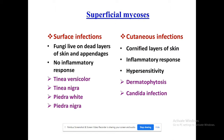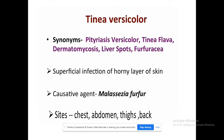Today we will focus on tinea versicolor, also known as pityriasis versicolor, tinea flava, dermatomycosis, liver spot, or perficarens. This is a superficial infection of the horny layer of the skin, caused by the fungus Malassezia furfur. The major sites where it causes disease are the chest, abdomen, thighs, and back.